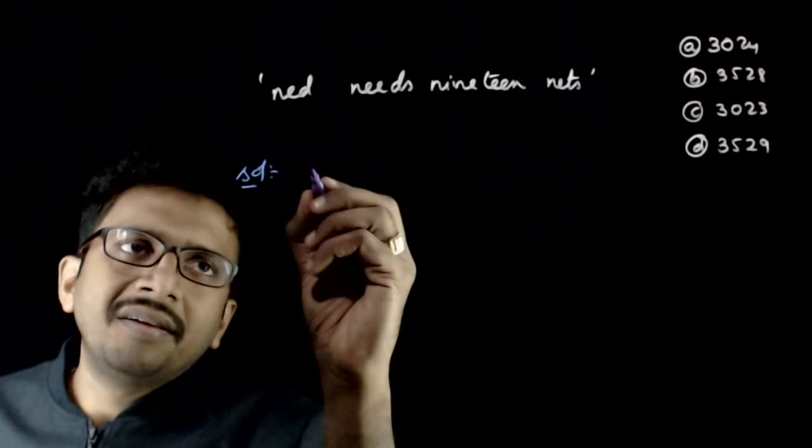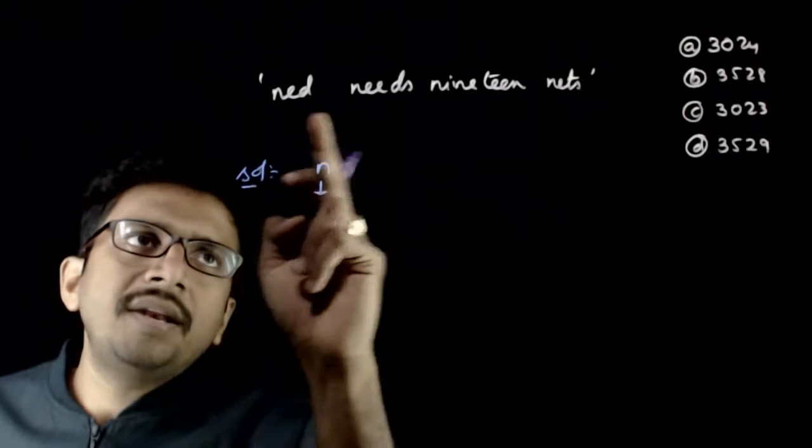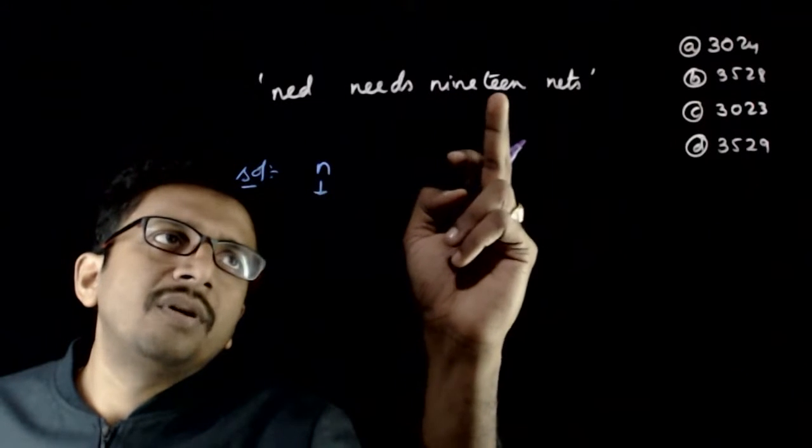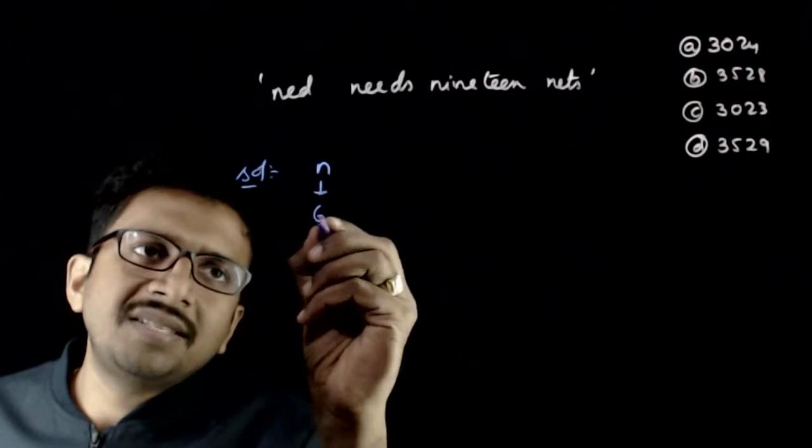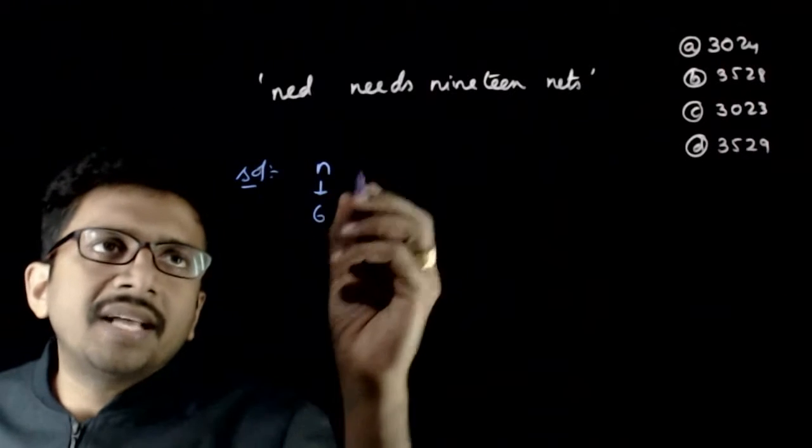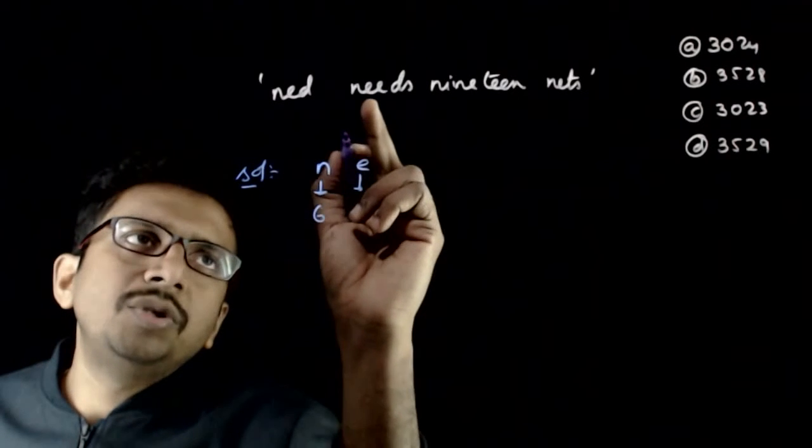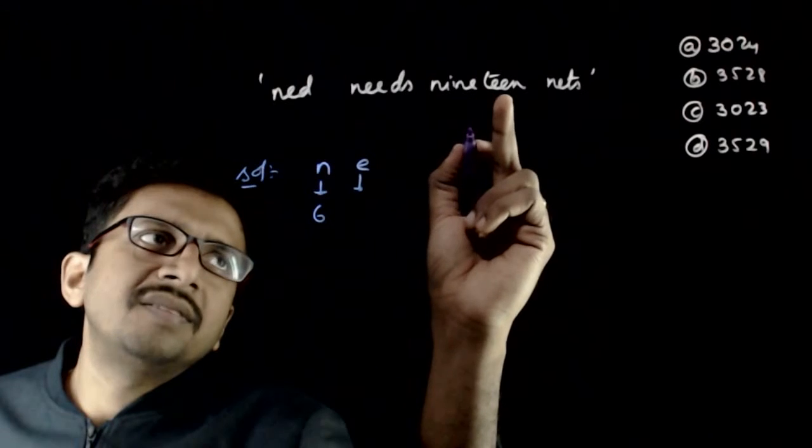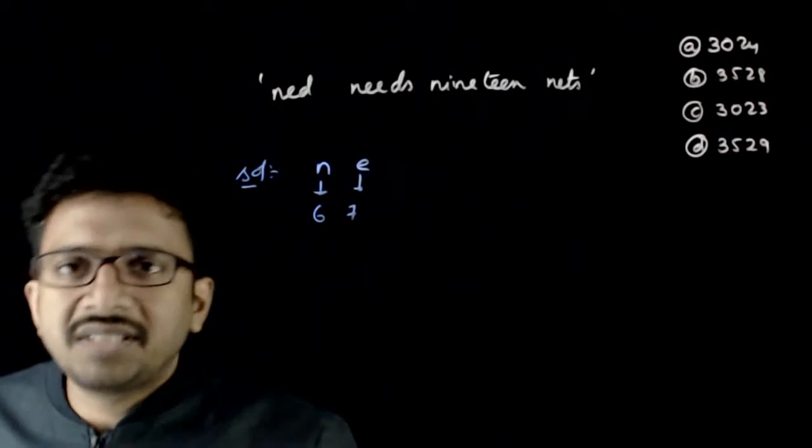So assume that you have n. How many times is n repeated? 1, 2, 3, 4, 5, 6. So there are 6 n's, right? Next, how many e's are there? 1, 2, 3, 4, 5, 6, 7 e's. So you have 7 e's.